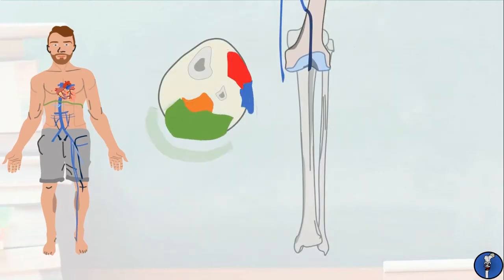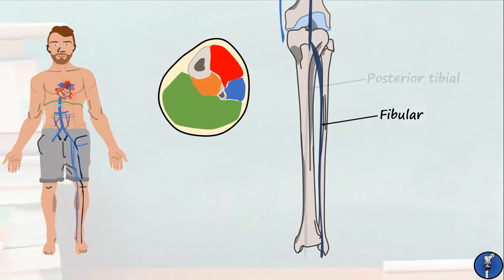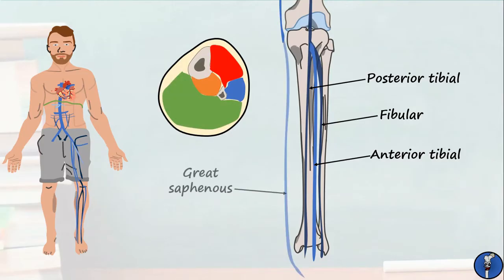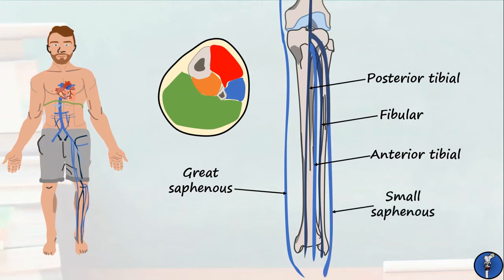In the leg, the popliteal vein receives the venae comitantes from the fibular, posterior tibial and anterior tibial veins, which drain the lateral, posterior and anterior compartments respectively. Additionally, in this area we have the rest of the great saphenous vein, which passes anterior to the medial malleolus of the ankle. We also have the small saphenous vein, which travels up the lateral leg from posterior to the lateral malleolus to the popliteal vein. I remember that the great saphenous is on the inside of your leg because it's so great, you need to protect it.